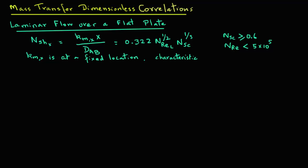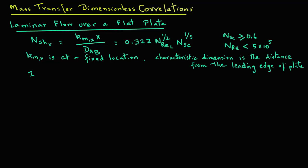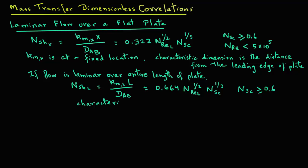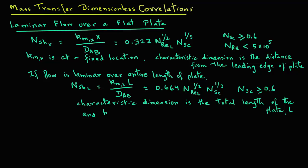If the flow is laminar over the entire length of the plate, then we can also write N_SH,L — the Sherwood number for the entire plate — as K_ML times L divided by D_AB equals 0.664 times Reynolds number N_RE,L raised to power 1/2, times Schmidt number N_SC raised to power 1/3. This is valid for Schmidt number greater than 0.6. The characteristic dimension is the total length of the plate L, and K_ML is the average value of the mass transfer coefficient for the entire plate.